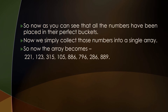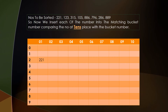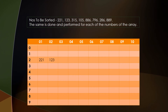We now begin pass 2. We sort the numbers according to the digits at the tens place. 221 is placed in bucket 2 since there is a 2 at the tens place. Similarly, 123 at bucket 2 second position, 315 in bucket 1, 105 at bucket 0 since there is a 0 at the tens place, 886 at bucket 8, 796 at bucket 9, 286 at bucket 8 second position, and 889 at bucket 8 third position.